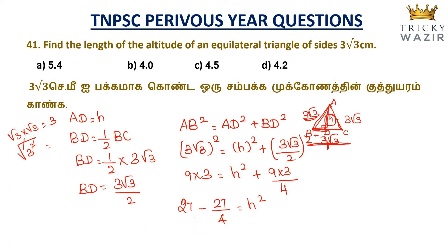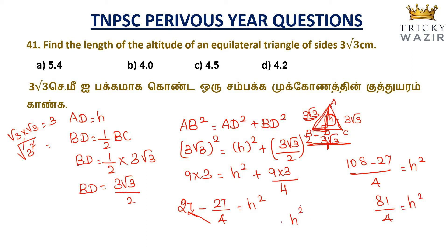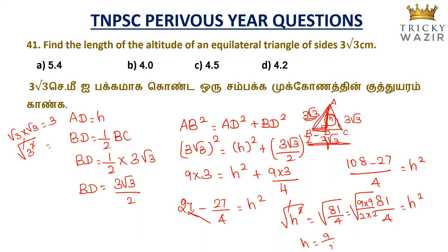So 27 minus 27 by 4 equals H². That is 108 by 4 minus 27 by 4 equals H², giving 81 by 4 equals H². Taking the square root of both sides, H equals root of 81 by 4, which equals 9 by 2, equal to 4.5.